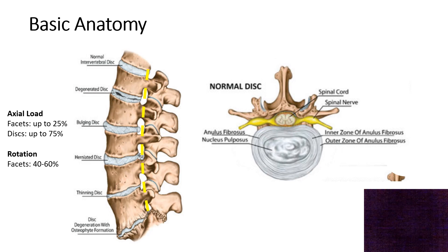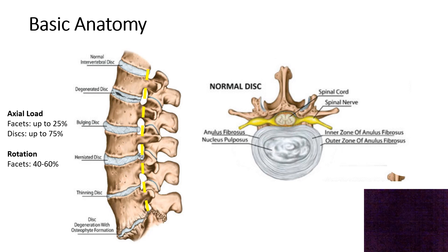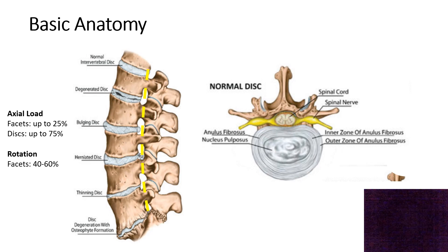When you lean back, that 25% of weight on your facets will go up to 40%. Leaning back, twisting, and side bending offloads the disc and puts the load on the facets. So you'll end up with posterior column pain, which most typically is due to arthritis of the facets.